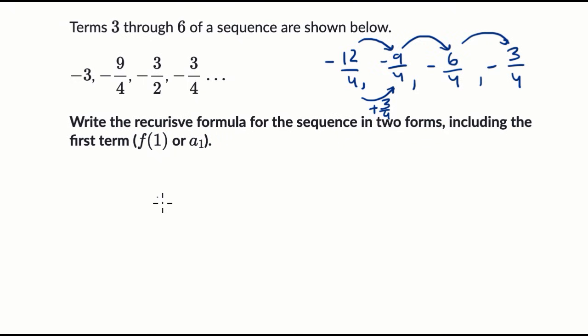So I can start to write the recursive formula. We haven't figured out what the first terms are yet, but I could write f of n, the nth term, is going to be equal to the term right before that. So f of n minus one, the n minus one, f of n minus one term, and then plus three fourths.